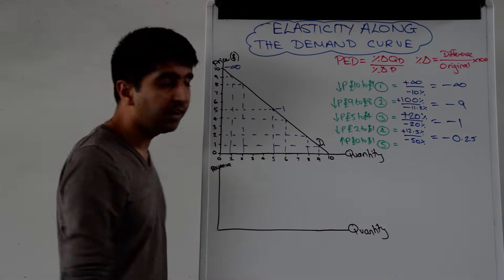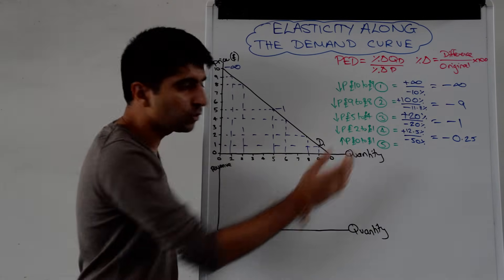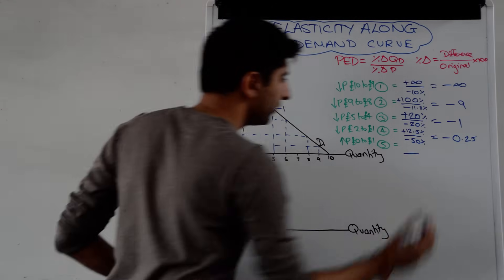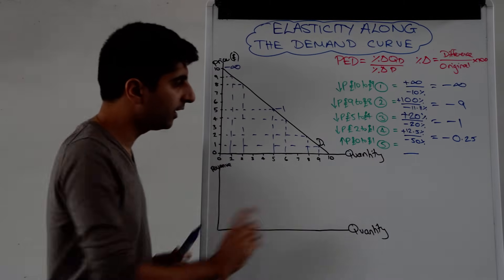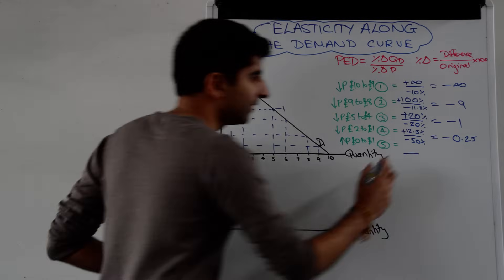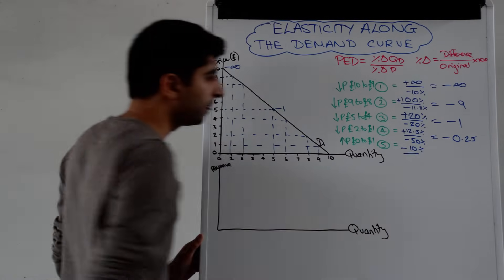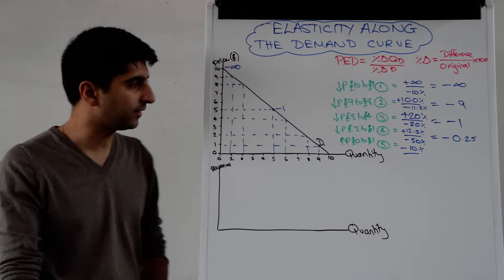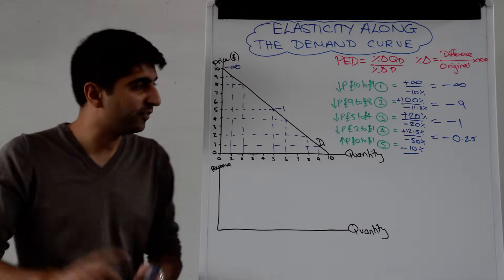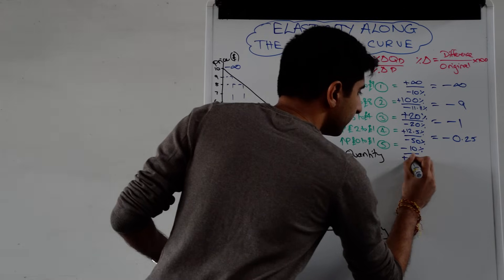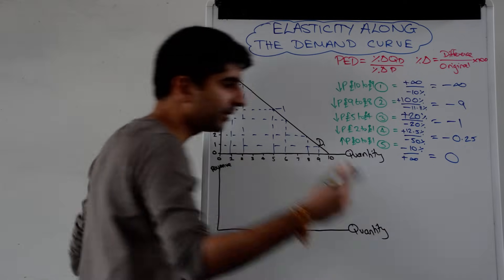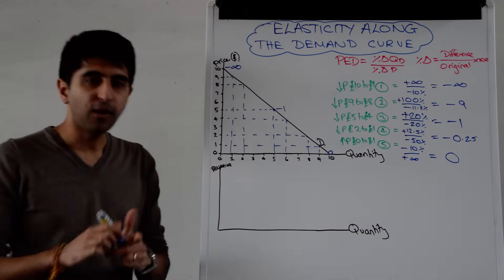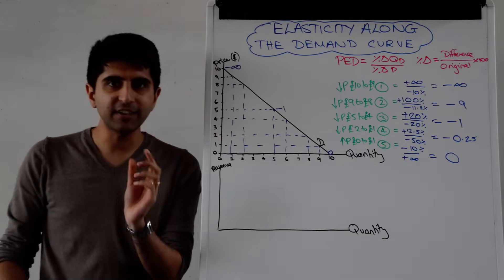If we look at the next equation: a price increase from £0 to £1 — so this good was free and now it costs £1. Quantity demanded falls from 10 to 9, a 10% reduction in quantity demanded. But the price increase from 0 to 1 is an infinite increase — the difference is 1 divided by 0, which is infinity. Any number divided by infinity is 0 by mathematical rule. So the very bottom of the demand curve represents perfectly inelastic demand.